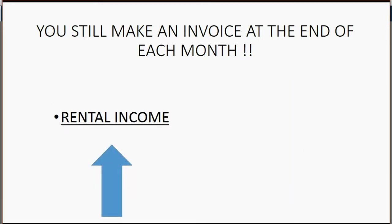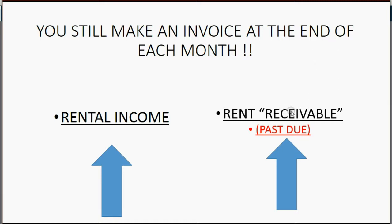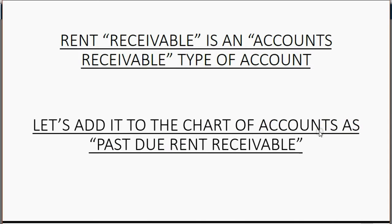Instead, when you make an invoice for a tenant who pays late, rental income still goes up because the landlord still earned the money, but another different account — rent receivable — that represents the past due rent from tenants who pay late, will be the account to go up. Because you earned the money, this account, rent receivable, represents what they did not yet pay. Rent receivable is an accounts receivable type of account. Let's add it to the chart of accounts with the name past due rent receivable.